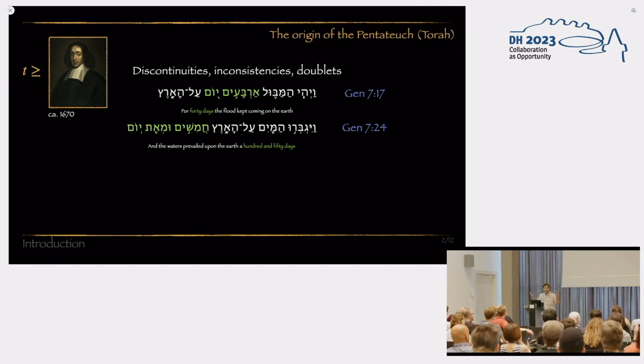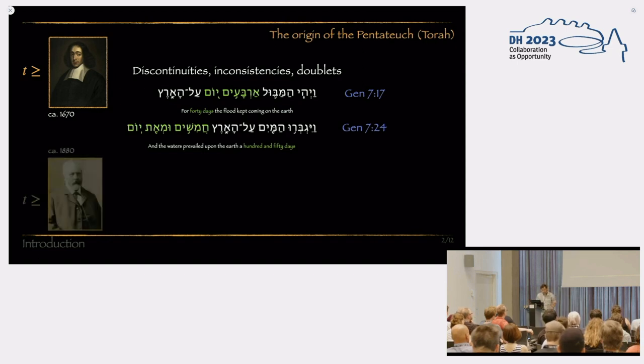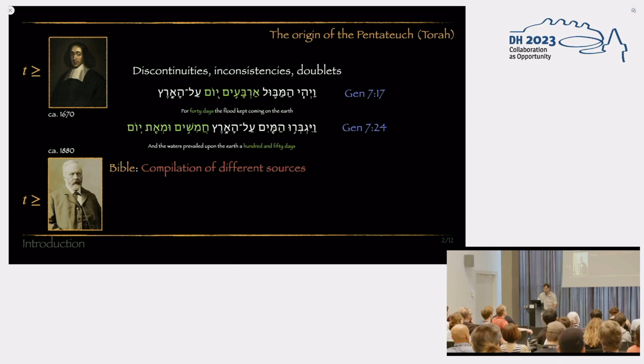We have two different accounts of the same event that are also contradictory found in the same text, so what is happening here? And these issues were addressed in the thesis of one Julius Wellhausen in the latter part of the 19th century, whose thesis was essentially that the Bible is a compilation of different distinct textual sources.